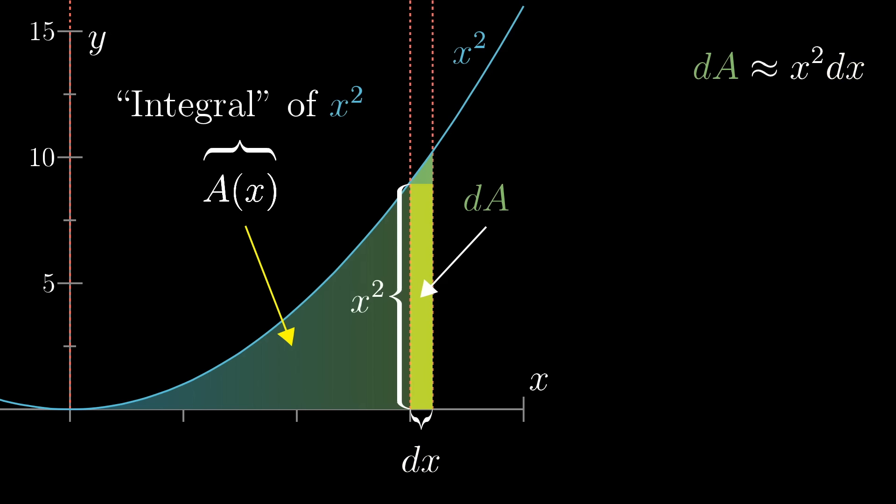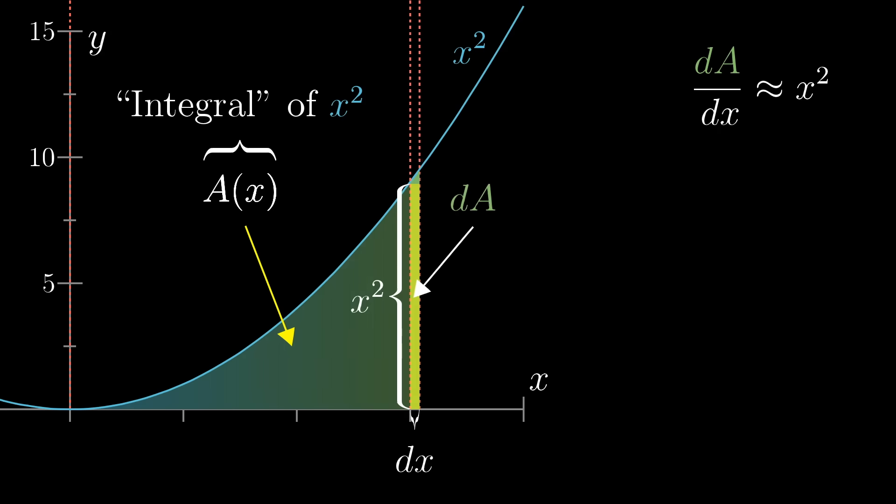Or rearranged, dA divided by dx, the ratio of a tiny change in A to the tiny change in x that caused it, is approximately whatever x squared is at that point. And that's an approximation that should get better and better for smaller and smaller choices of dx.